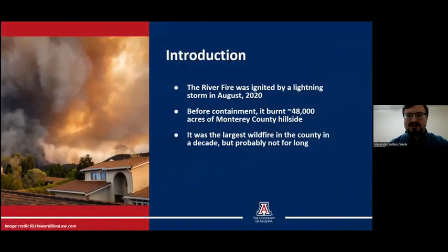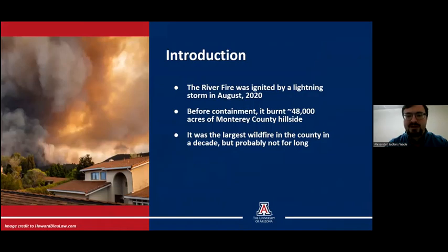In August 2020, two wildfires were ignited by a passing lightning storm in Monterey County. The larger of these two fires, officially dubbed the River Fire Incident, began in the hilly country south of Salinas and consumed just over 48,000 acres in 19 days. Those plumes soon resulted in air quality warnings across the county, as the particulate load made the air difficult to breathe and a health risk for the very young and the very old.